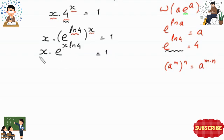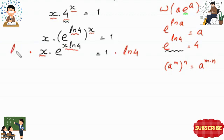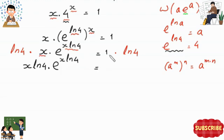To match the Lambert W form we need the same expression in both positions. Currently we have x times ln of 4 in the exponent but only x outside, so we multiply both sides by ln of 4: x times ln of 4 times e to the power (x times ln of 4) equals ln of 4.